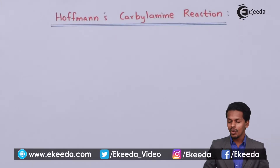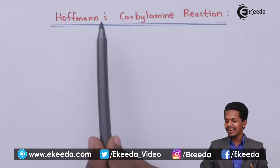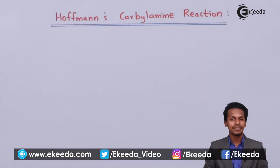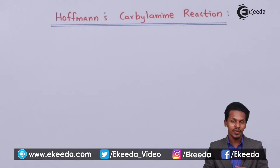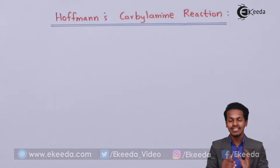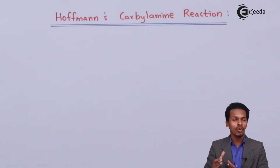The Hofmann Carbylamine reaction is nothing but the reaction of a primary amine with chloroform in the presence of a base. Let me talk about the general reaction first, and then we will go through examples.